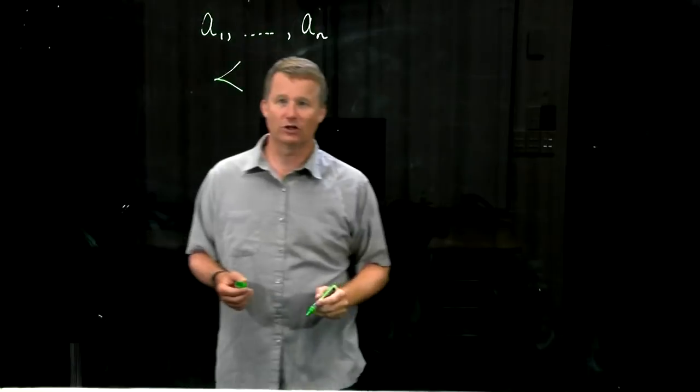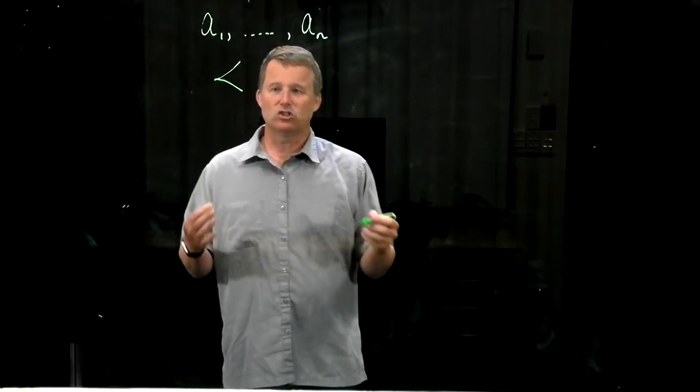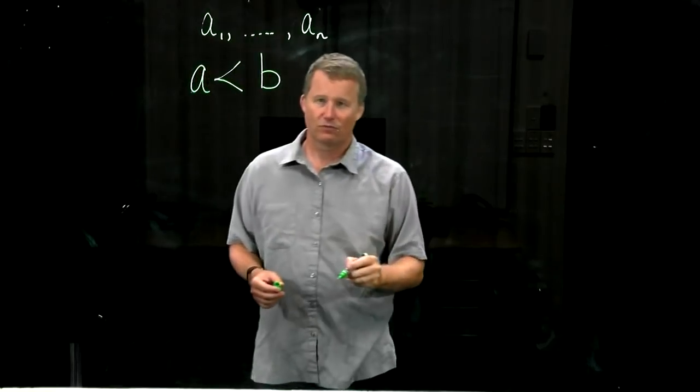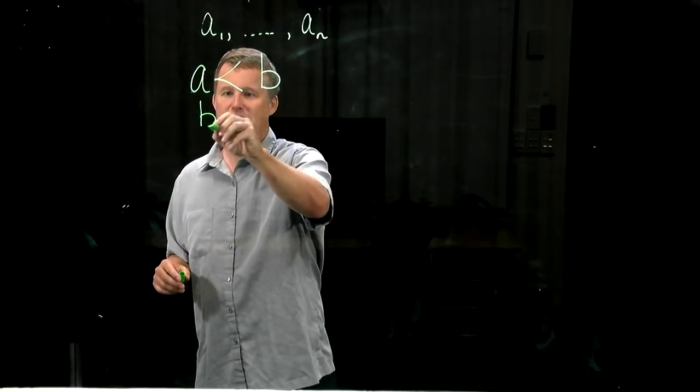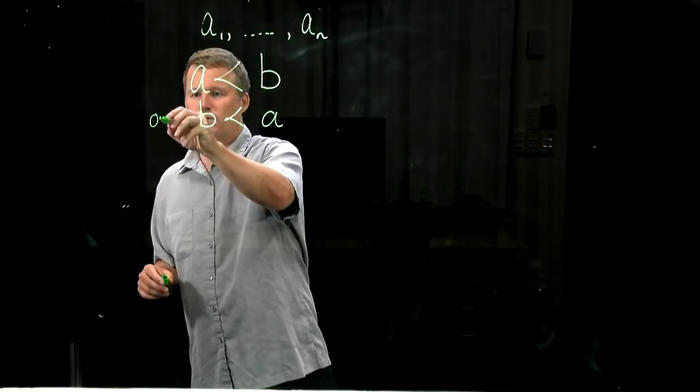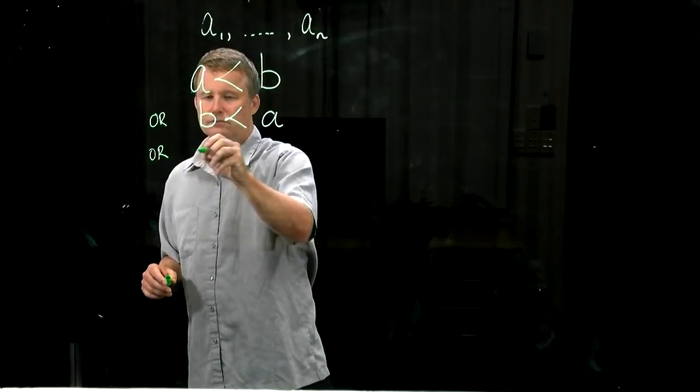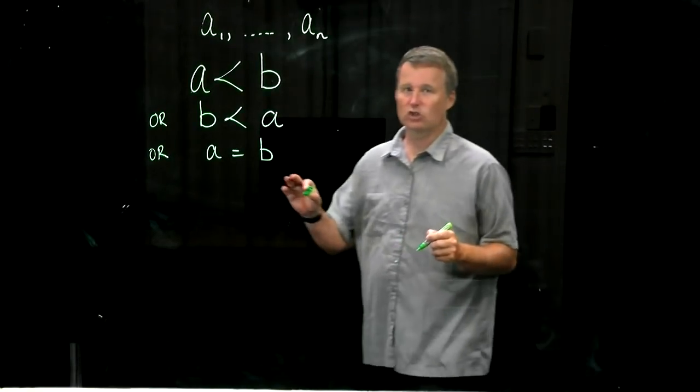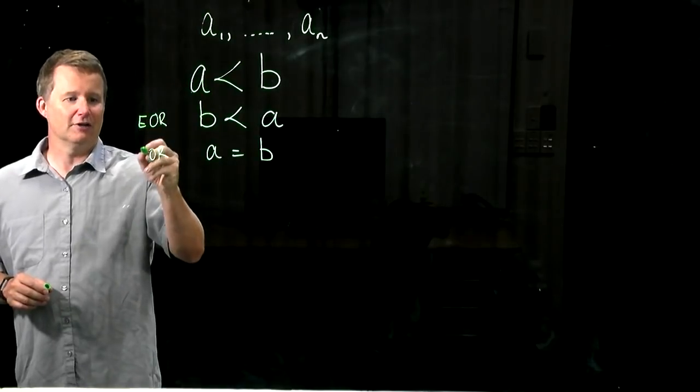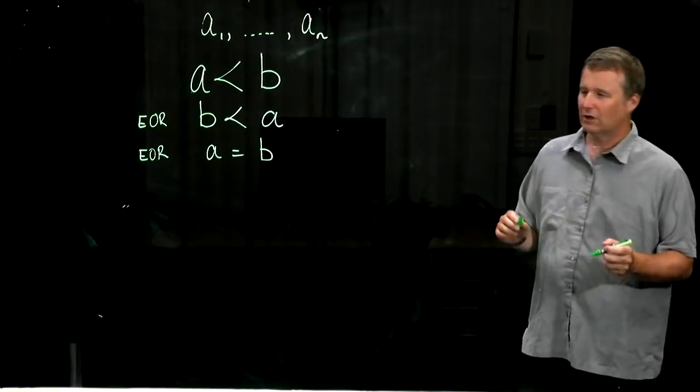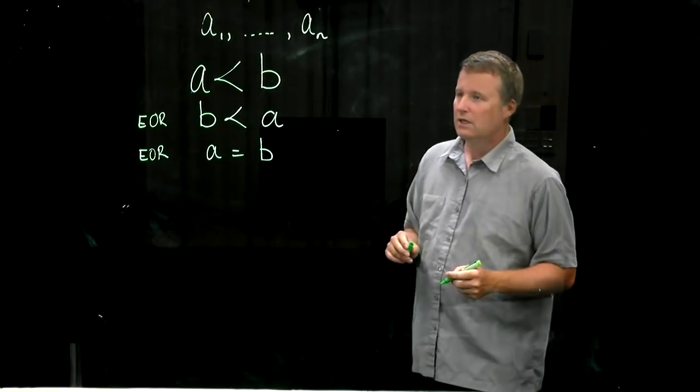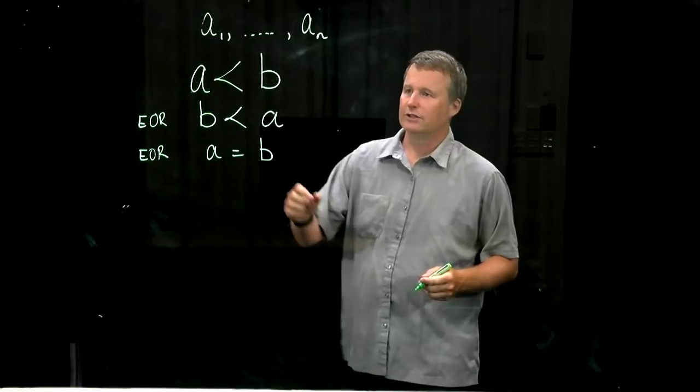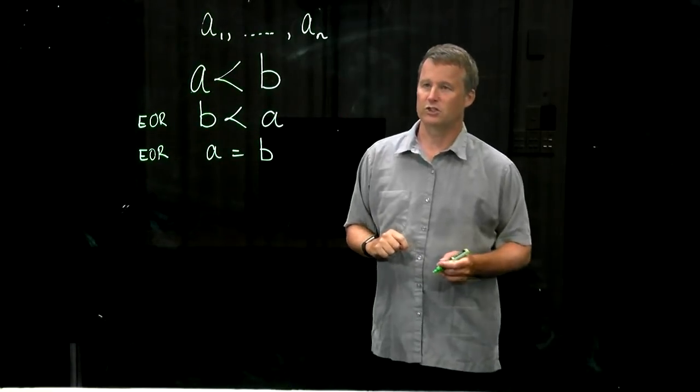We'll write this as a curly less-than, and the key property is that it's a total ordering. That means if you have any elements a and b, then either a is less than b, b precedes a, or a equals b. Those are the only three things that can happen. Precisely one of them must happen. These are exclusive ORs, not the usual inclusive OR. Only one of those can happen.